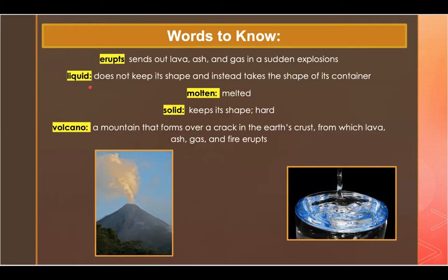The next word we're going to listen for in our story is liquid. Liquid is something that does not keep its shape and instead takes the shape of its container. An example of this is there is liquid rock deep inside the Earth.